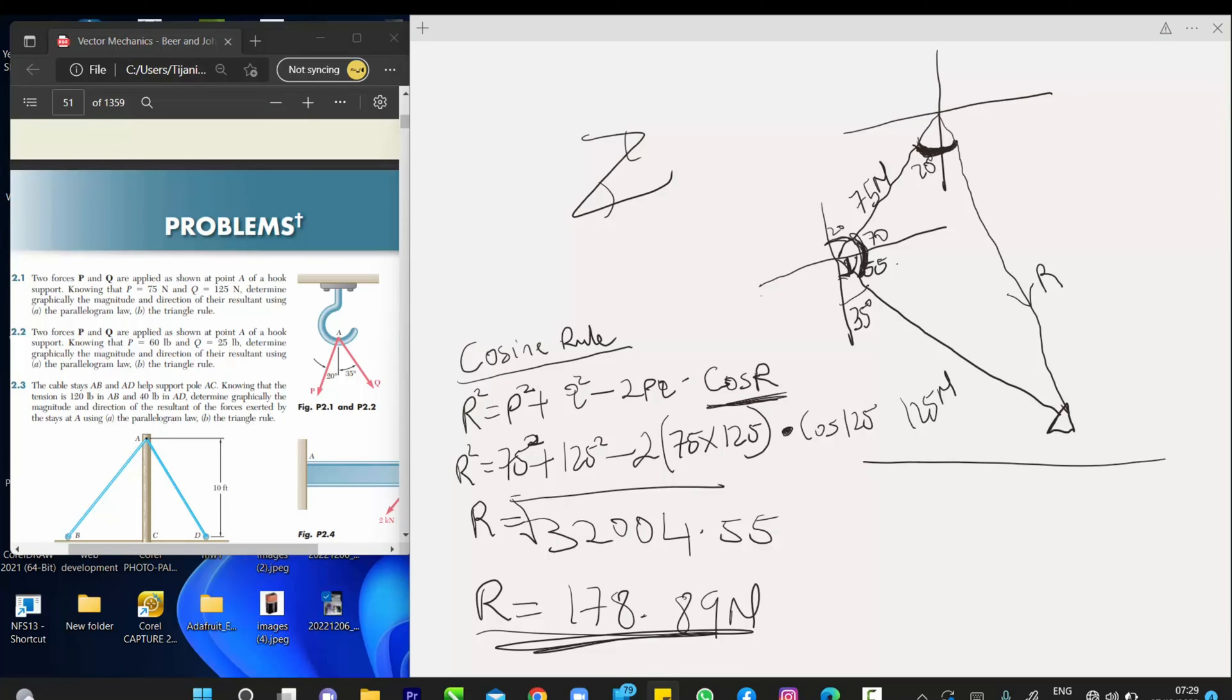So, let's call this place alpha, sine alpha over what is opposite alpha is our Q, which is 125.